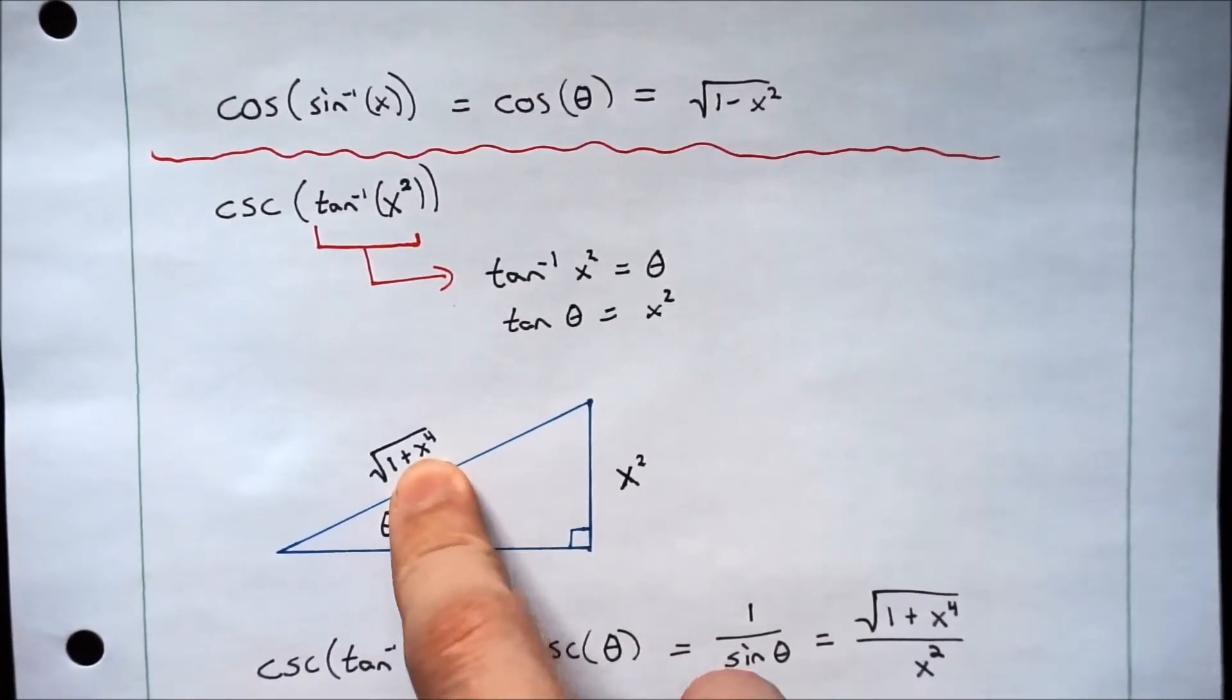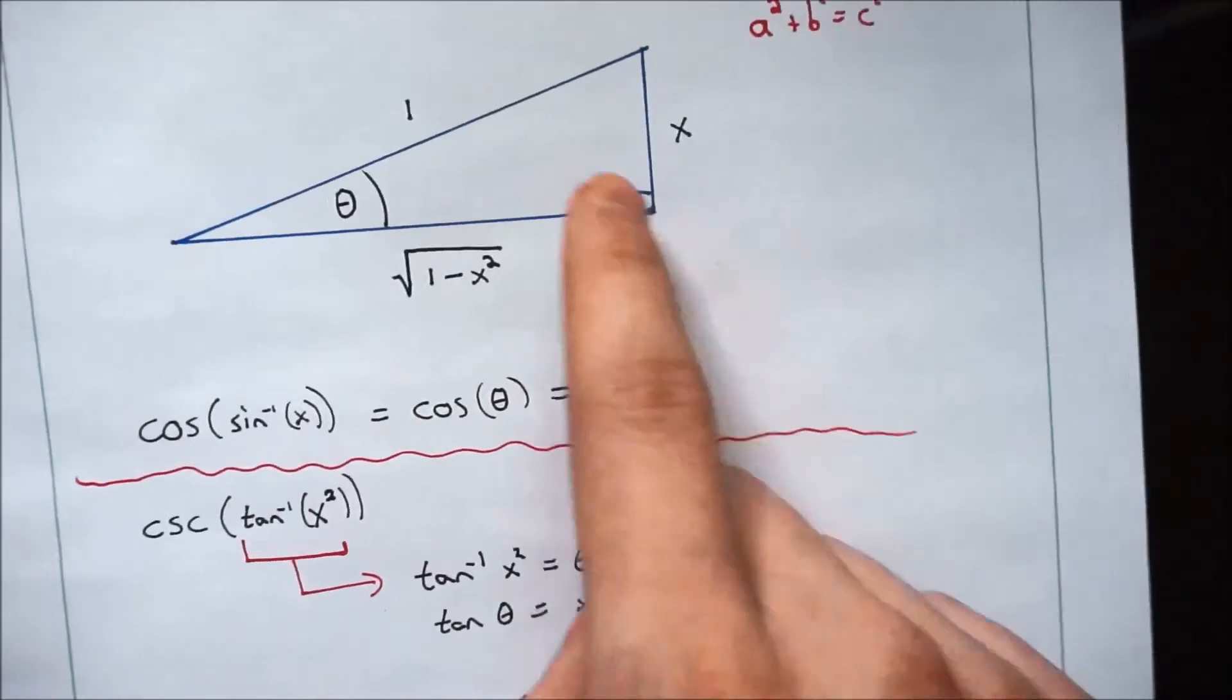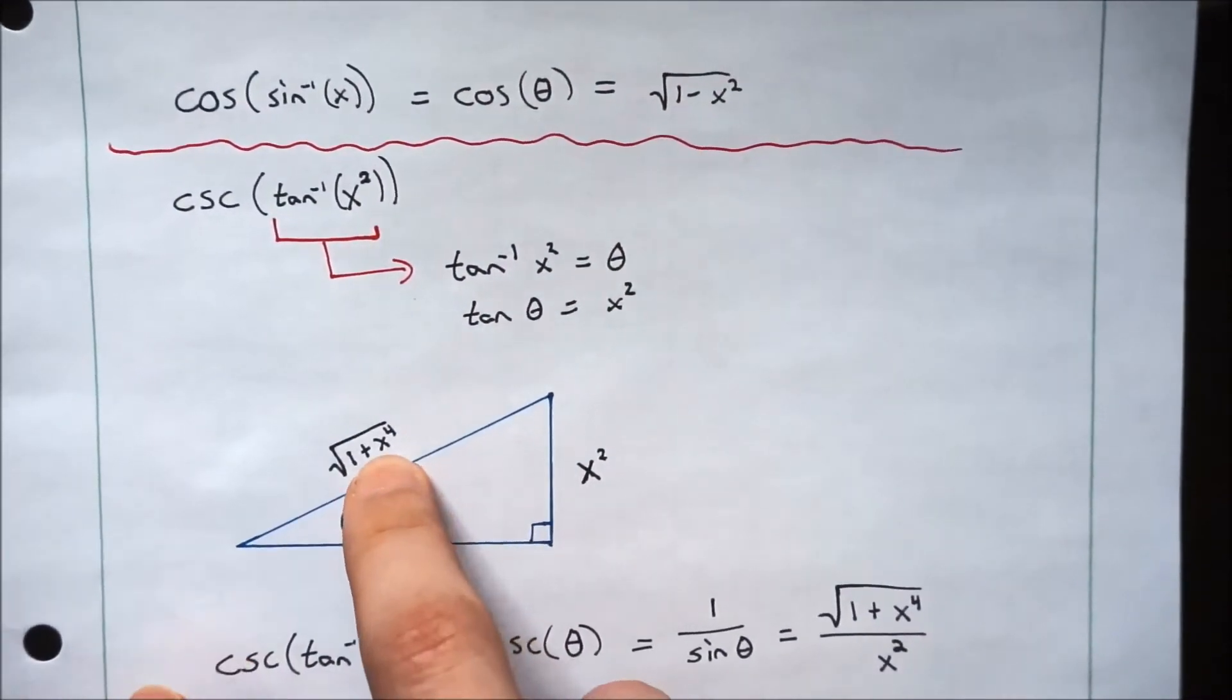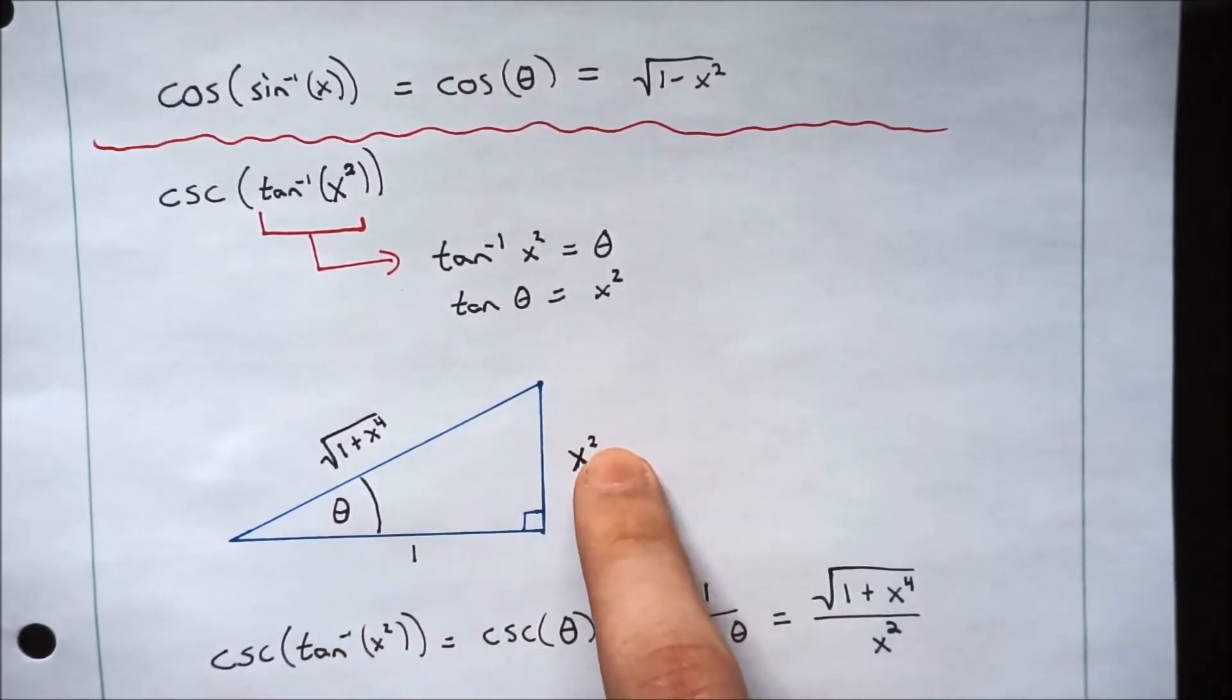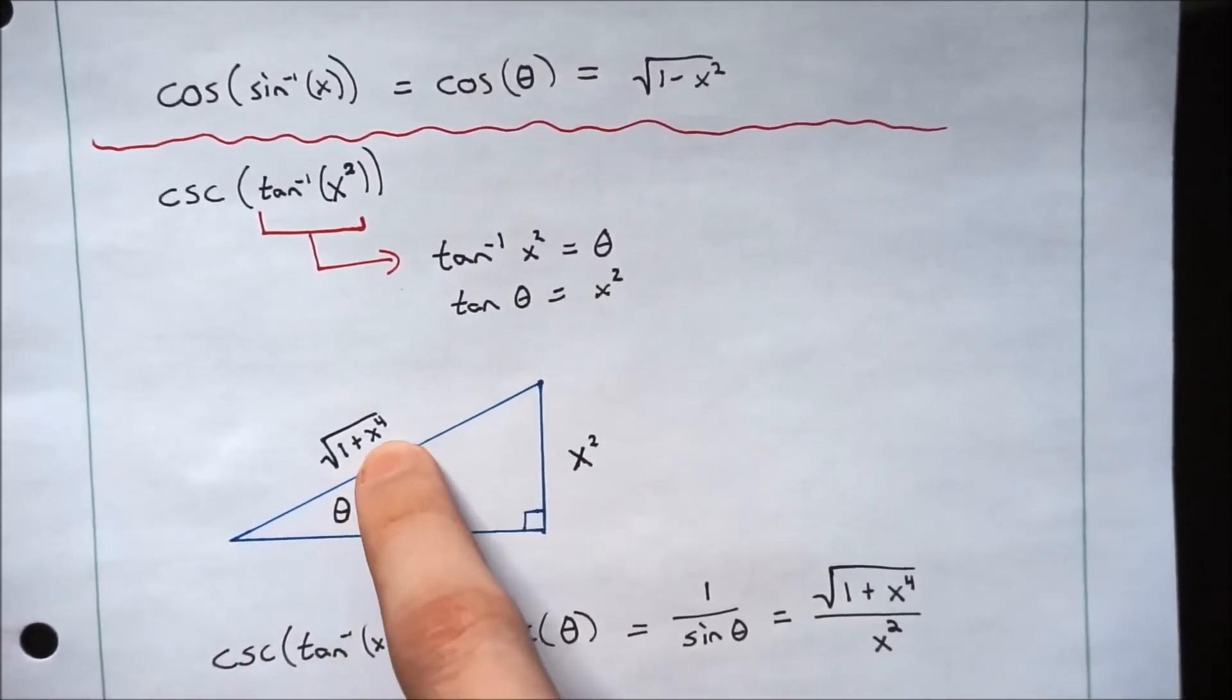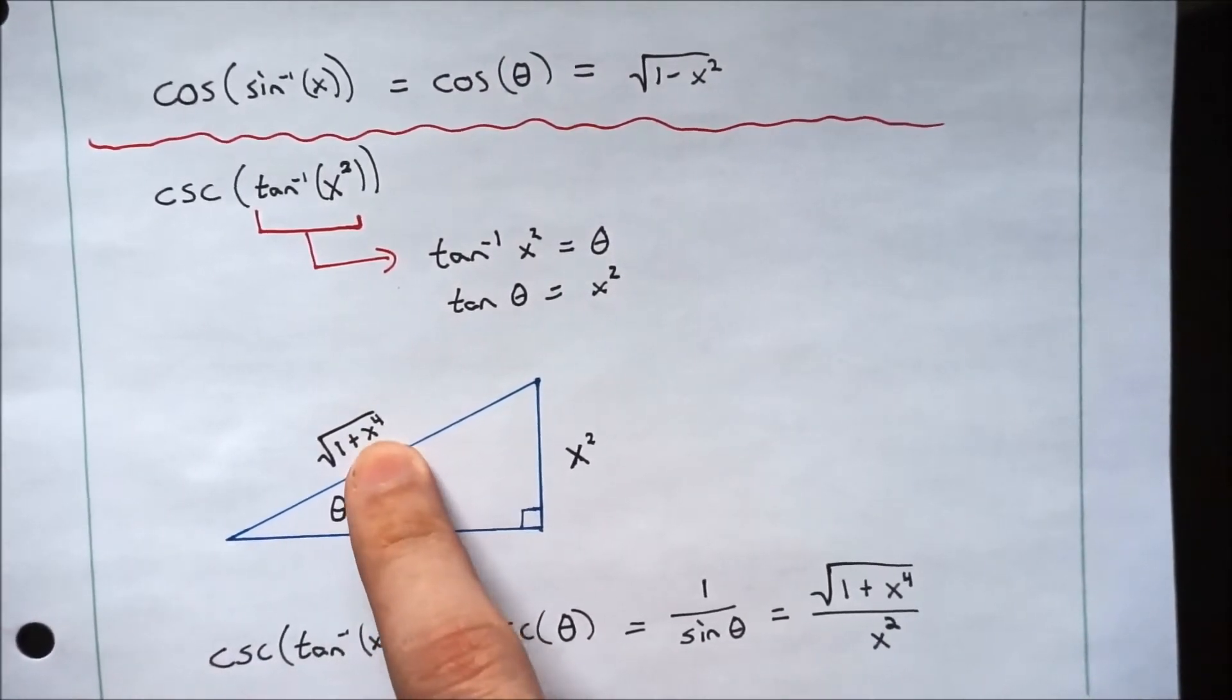And again, we're just going to use Pythagoras to find this one. And this is where I've seen a lot of mistakes made, because you get used to these ones where you have an x squared here, and you just automatically write x squared. But you can't do that because with Pythagoras, you have to square these terms. So it's 1 squared plus x squared squared, which gives you the square root of 1 plus x to the fourth over here. Most people, when they make a mistake, they'll write x squared there. So just be mindful of that when you're doing this.